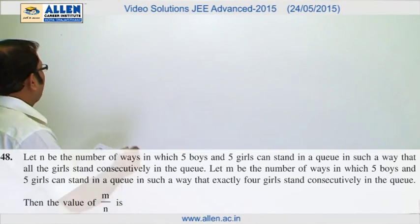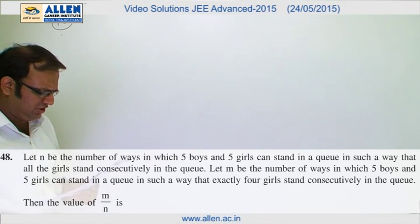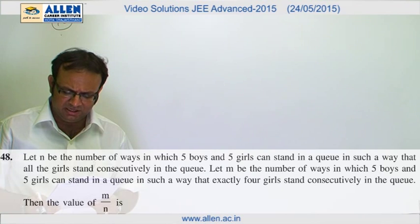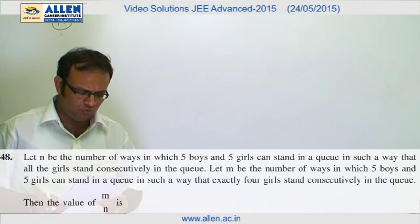In question number 48, it is a P and C question in which it says that let n be the number of ways in which 5 boys and 5 girls can stand in a queue in such a way that all girls stand consecutive.